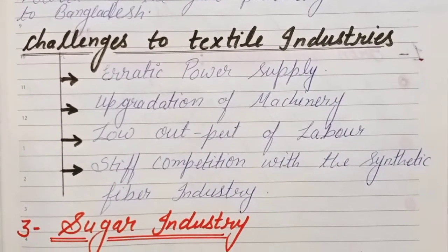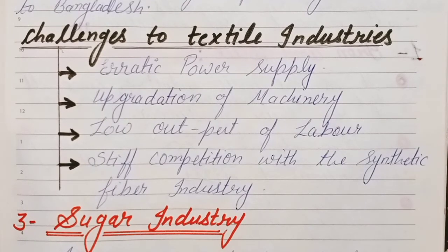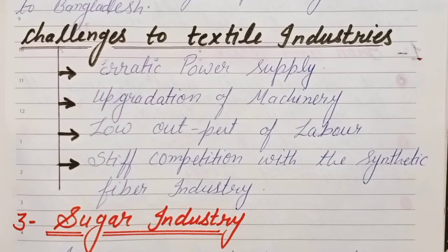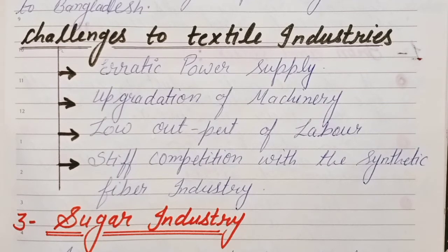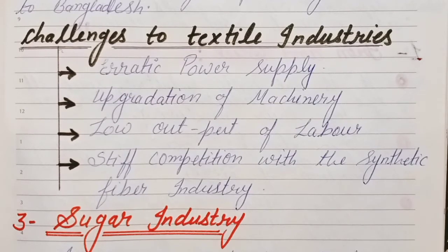There are several challenges facing textile industries today. First is erratic power supply — power is not supplied properly, which reduces production. Second is upgradation of machinery — old machinery needs to be upgraded, but this is very costly. Third is low output of labor, which is also a big challenge for the textile industry.